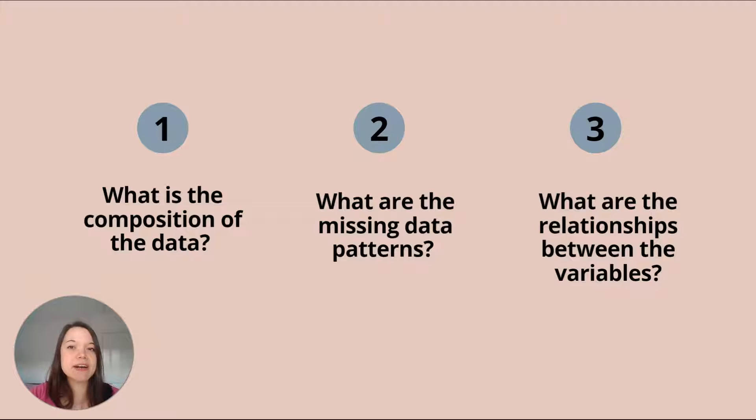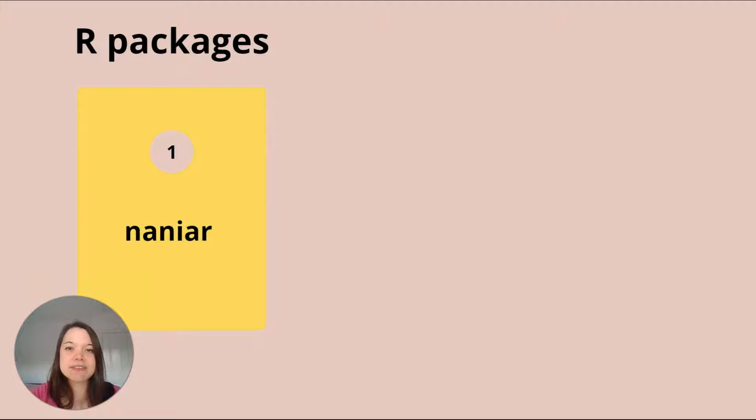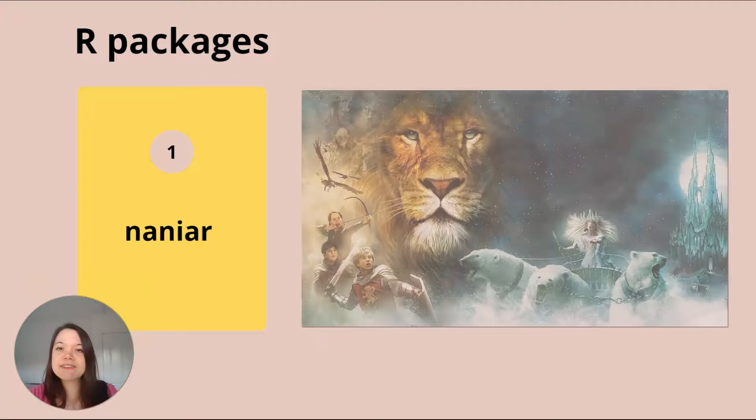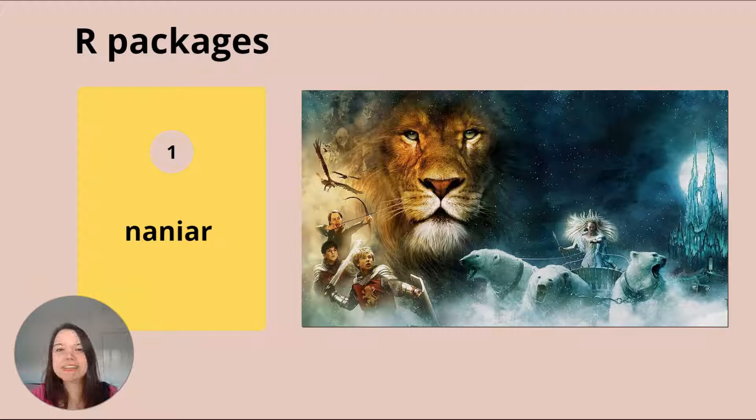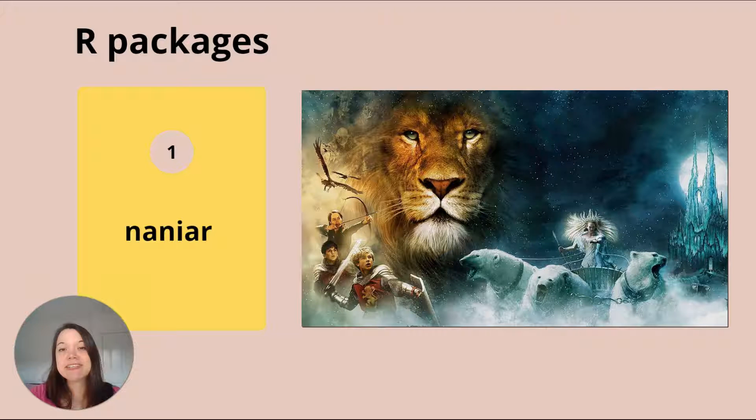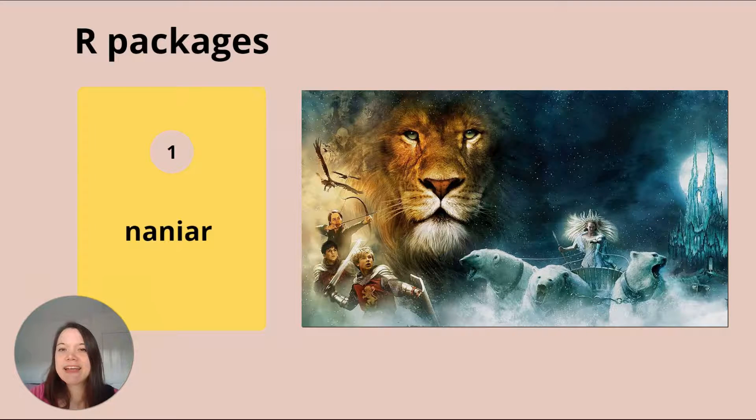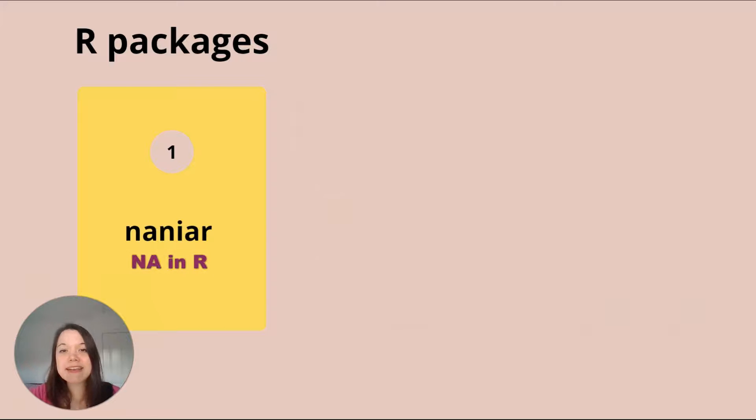We'll be using three different R packages. The first is called Narniar, and I just discovered that it's named after C.S. Lewis' book Narnia because the world of missing data seems like a completely different world. And cleverly, it also looks like N-A in R. We'll also use a command from mice, and I'm going to assume that you are comfortable using syntax from ggplot2. So, let's begin.